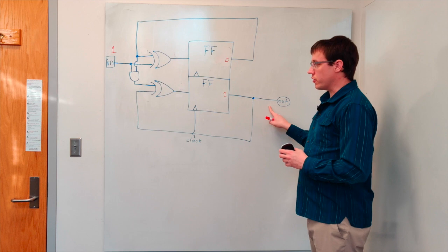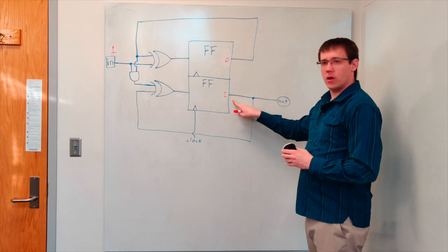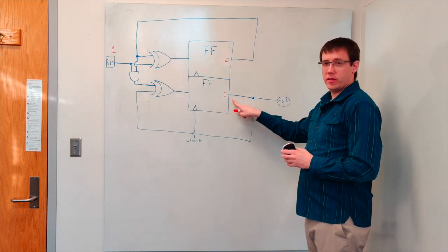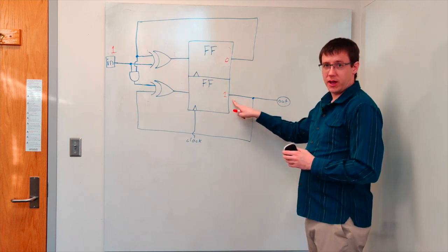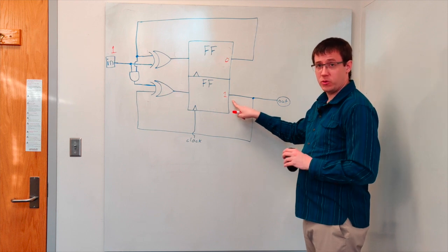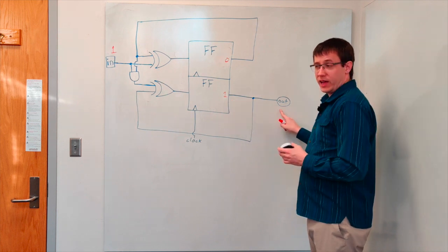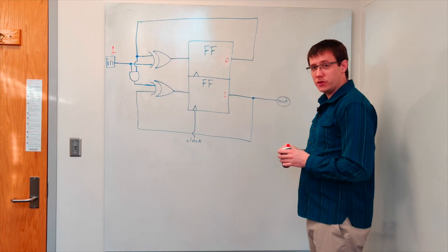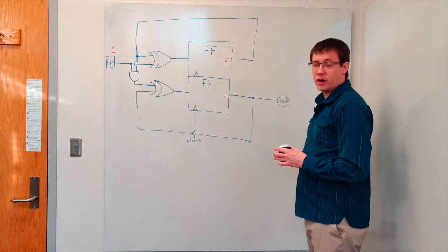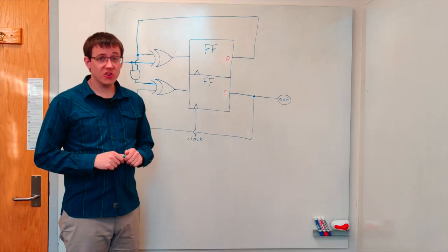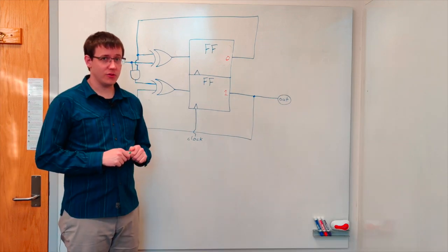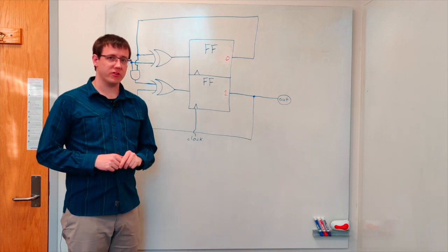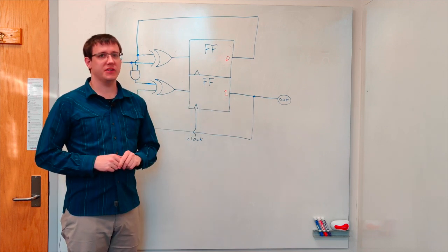And so these flip-flops are acting as a two-bit counter, going from zero to one to two to three to zero, each time the clock ticks while the input is one. The output of the circuit is always whatever is being output by the bottom flip-flop, which is our high-order bit in the counter, and so the output will be one whenever our two-bit register is storing a two or a three.